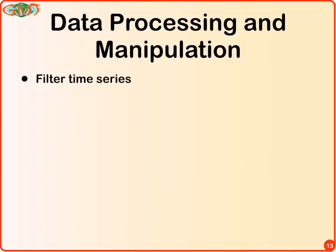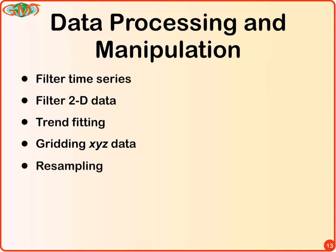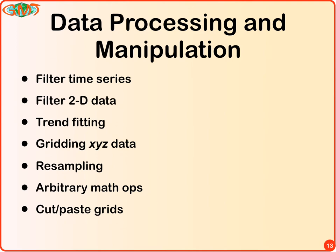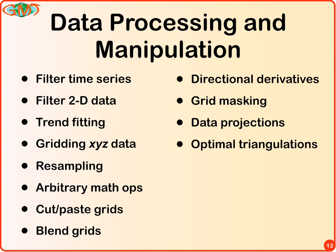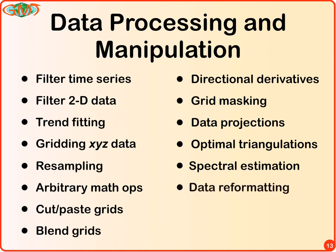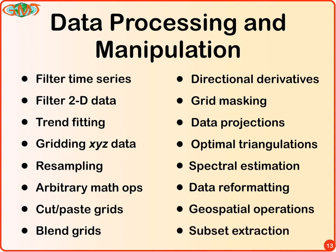For data processing and manipulation tasks, there's a whole range of capabilities: filtering time series; filtering 2D data grids with spatial or frequency filters; fitting low-order models to grids such as Fourier trends or polynomials; gridding data with multiple routines; resampling grids or datasets at different locations; arbitrary mathematical operations on grids and tables; cutting and pasting grids to get subsets; blending overlapping grids into a unified product; directional derivatives for image shading; grid masking; projecting data between different coordinate systems and datums; Delaunay and Voronoi triangulations of spatial data; spectral estimation and Fourier transforms; and reformatting data to work with other packages.